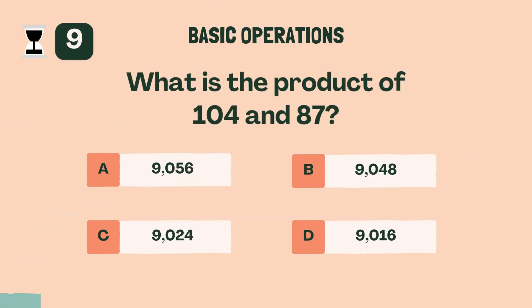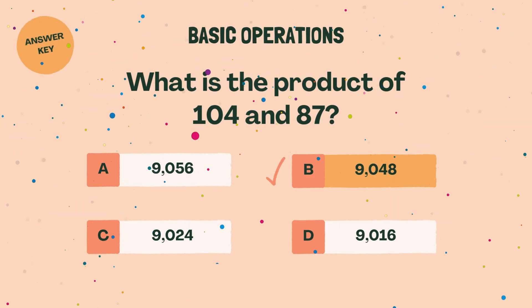What is the product of 104 and 87? B, 9,048.